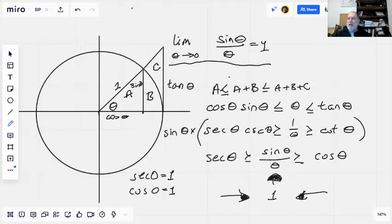and that way it gets squeezed in between this vice grip of secant theta and cosine theta. And that concludes this demonstration that the limit as theta goes to 0 of sine theta over theta equals 1.